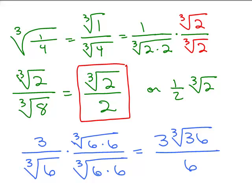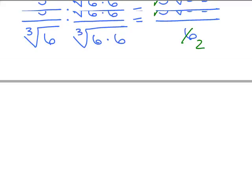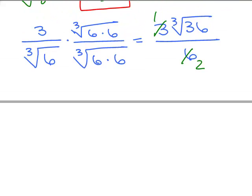Can anything cancel? Well, the 3 out in front of this cube root can cancel with a 6. So, my final answer is the cube root of 36 over 2.